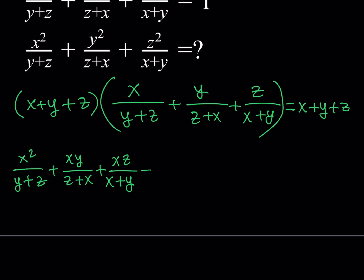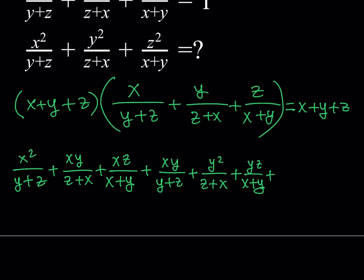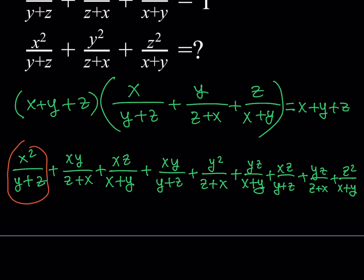Now distributing the y: we get xy/(y+z), then y²/(z+x) — which is another term we're looking for — and then yz/(x+y). Distributing the z: we get xz/(y+z), then yz/(z+x), and finally z²/(x+y) — which is the last term we need. So the three terms we're looking for are x²/(y+z), y²/(z+x), and z²/(x+y). We also got some extra terms, but that's fine.